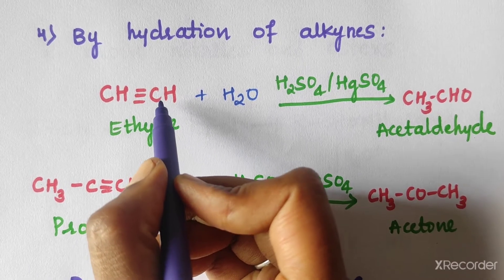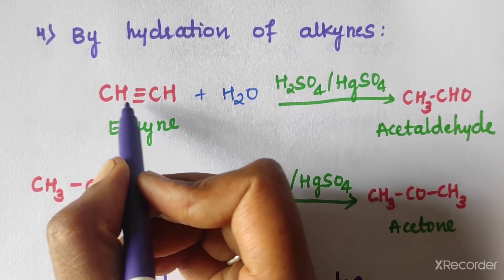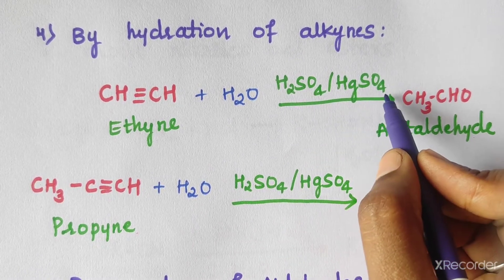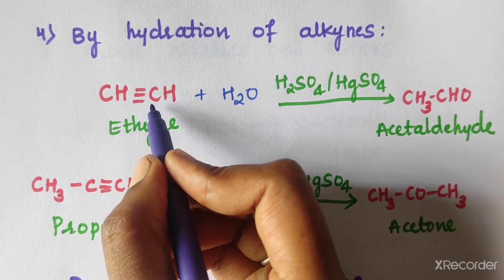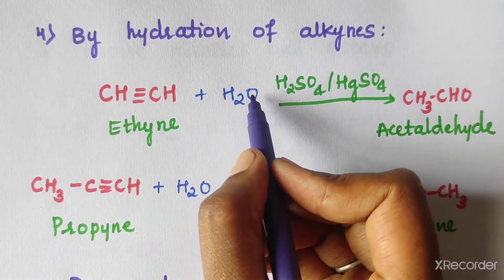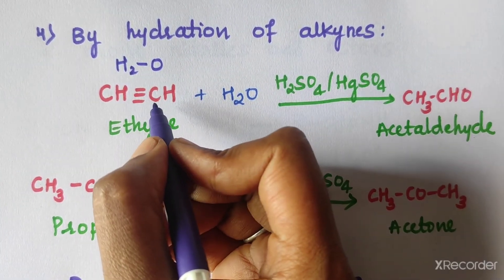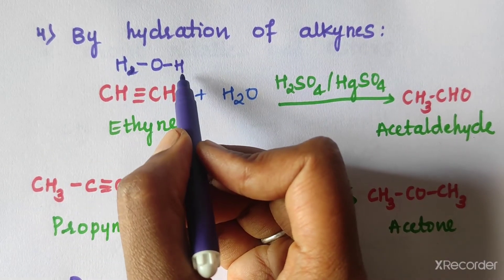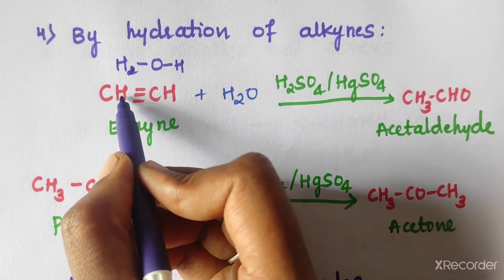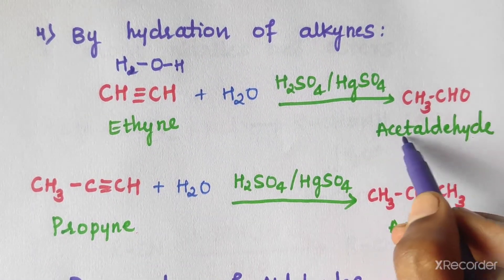Alkynes have a triple bond. For example, ethyne (CH≡CH) on addition of water in the presence of H2SO4 and HgSO4 across the triple bond: H adds to one carbon making CH3, and OH adds to the other giving CH3CHO. So ethyne gives acetaldehyde (CH3CHO).